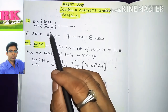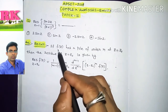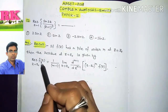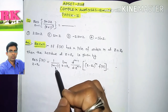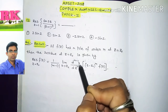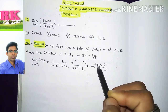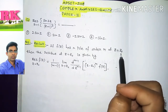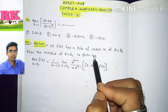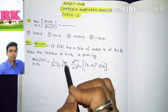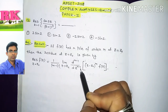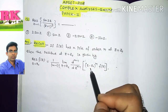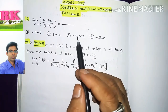This question is regarding poles of order M. We recall the result: if F(Z) has a pole of order M at Z = Z₀, then the residue at Z = Z₀ is given by (1/(M−1)!) × lim[Z→Z₀] of the (M−1)th derivative of (Z−Z₀)^M · F(Z). This is the important formula we will use to solve the given question.